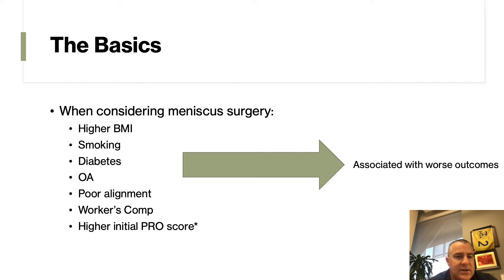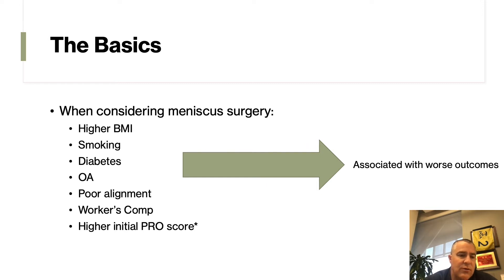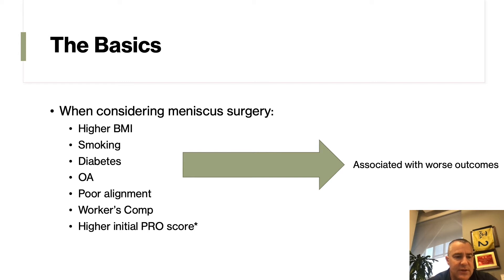When we consider patients who undergo meniscus surgery, all of these factors are associated with worse outcomes: higher BMI, smoking, diabetes, the presence of arthritis, poor overall alignment, workers' comp, and a higher initial patient-reported outcome score — meaning if you're not suffering early on, it's probably not bothering you enough to have surgery.